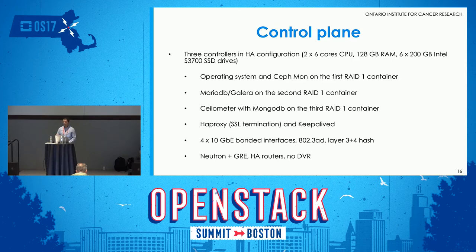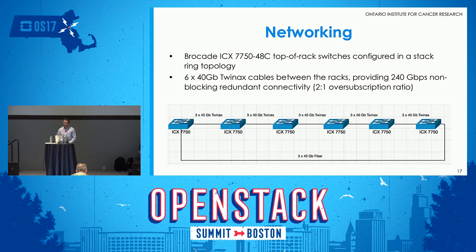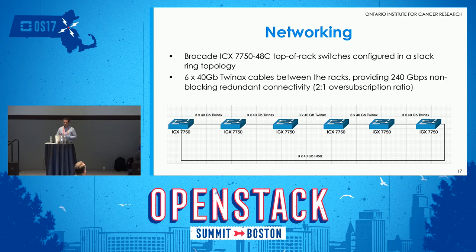We use Neutron with GRE because it was deployed more than two years ago and GRE had better support. We don't use DVR, just HA routers — we control traffic in and out better with internet connectivity only on the three controllers. The top-of-rack switches are stacked in a ring topology — a Brocade stack with 48 10-gig copper ports to servers and 640-gig uplinks. We cable three TNAS cables left and three right per rack, giving 240 gigs east-west between racks, redundancy with no blocked links, and a 2-to-1 oversubscription ratio.